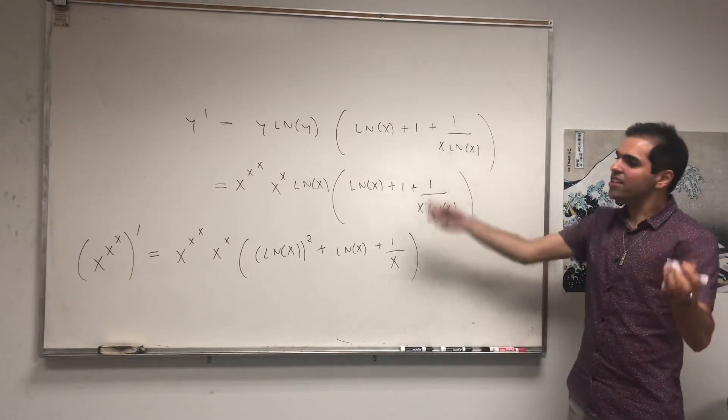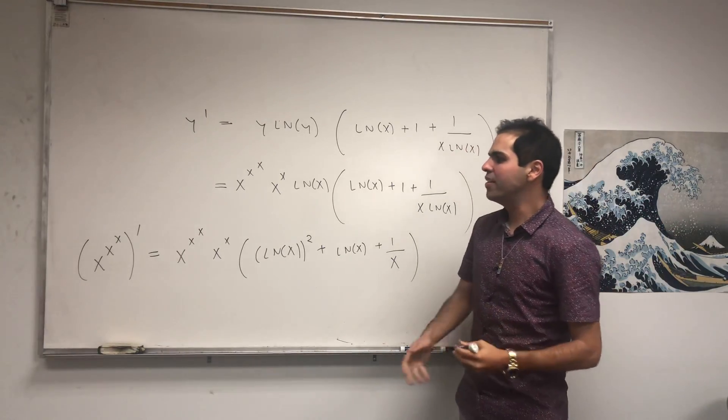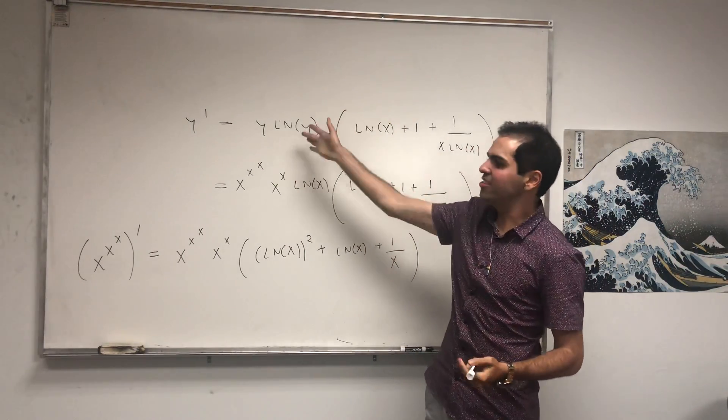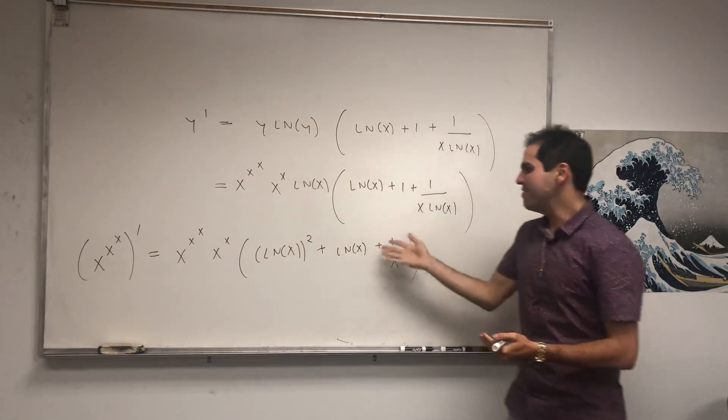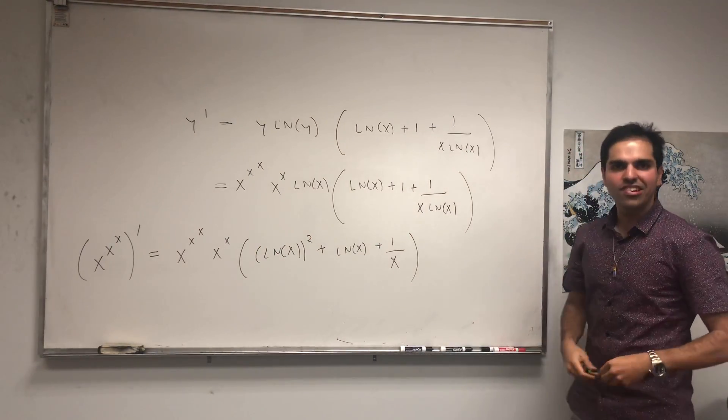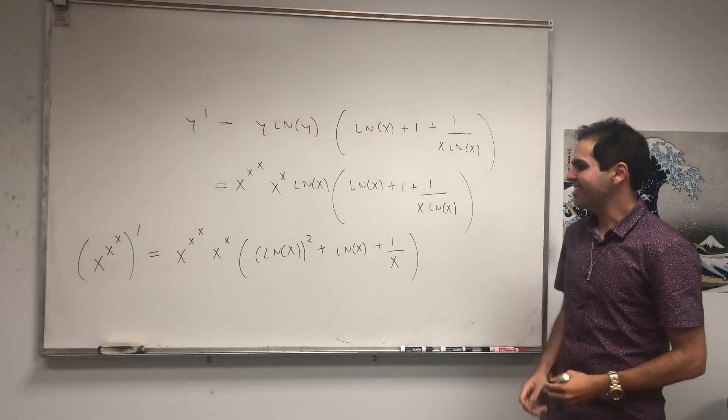And, of course, you can then just see a pattern. If you want to find the derivative of x to the x to the x to the x, you would just take ln three times and use the same technique and get a nice answer. So, it would be cool if someone actually worked it out and see what answer you get.